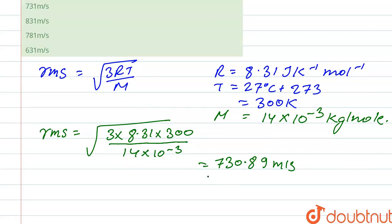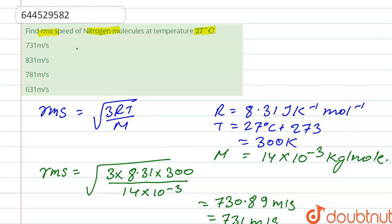which we can also write as 731 meters per second. So the correct option is option first. Thank you